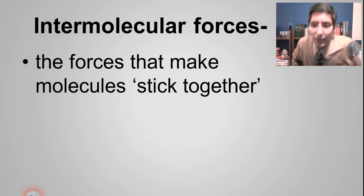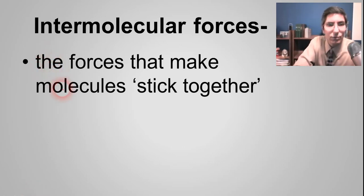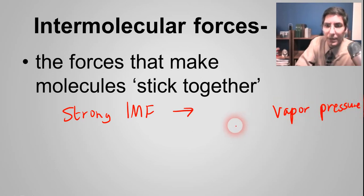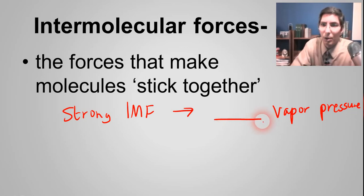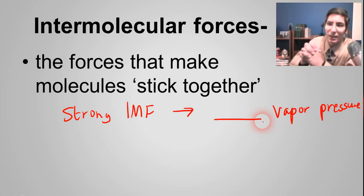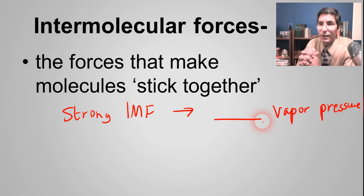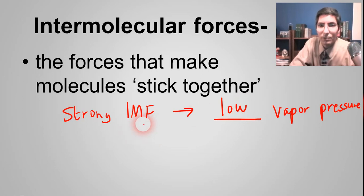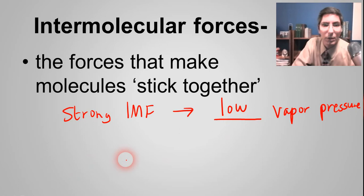Think about this: if something has strong intermolecular forces, what is its vapor pressure going to be like — high or low? Strong intermolecular forces means the molecules stick together very well and they're not going to evaporate very much. They're going to stay in the liquid phase, so you won't have a lot of vapor up here. We say it has a low vapor pressure. Strong IMF correlates to low vapor pressure.